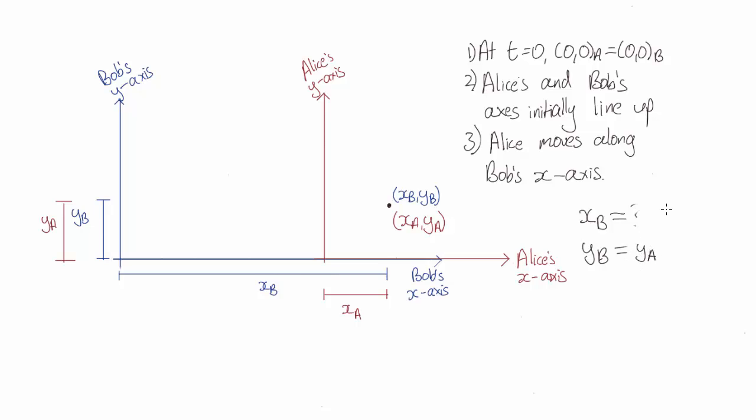Okay, what about the x-coordinate? Well, this is at some time t, and all this time Alice has been traveling at a speed v, so overall the distance Alice has traveled in this time is vt. From this you should be able to convince yourself that xb equals xa plus vt. These are what we call the Galilean transformations between two inertial reference frames.